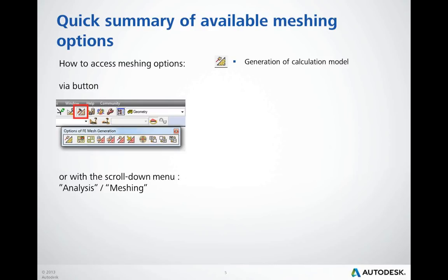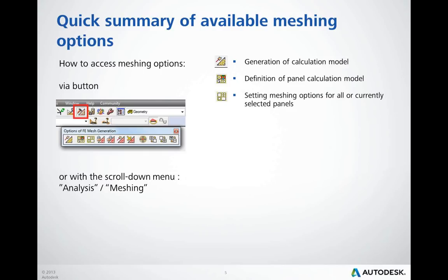The options include Generation of Calculation Model, which is intended for generating meshes for all panels defined in the model at the same time. Definition of a Panel Calculation Model is where you can decide if the panel should be meshed or is just intended for load distribution only. Setting Meshing Options allows you to choose which meshing algorithm you want to use and what mesh density you want to obtain. Freezing Meshes allows you to freeze panels that already have a final mesh so they are not adjusted during model generation.